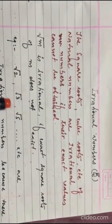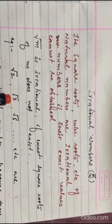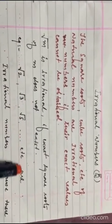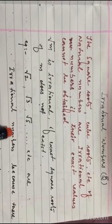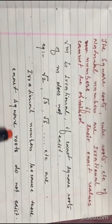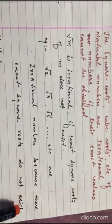For example, root 2, root 3, root 5, etc., are irrational numbers because exact square roots do not exist.